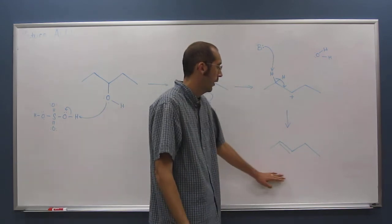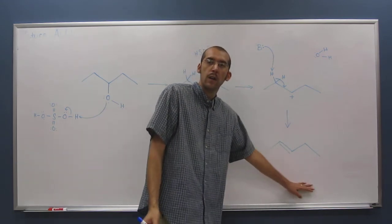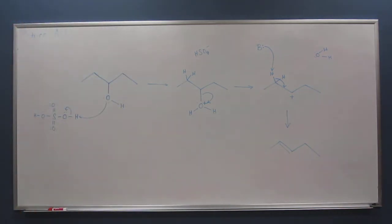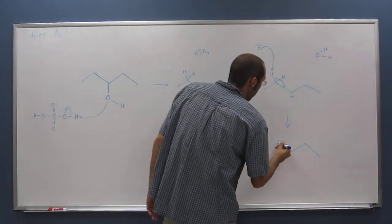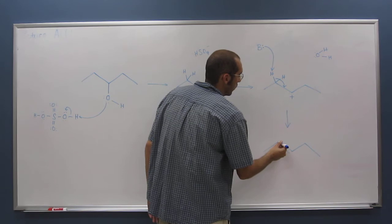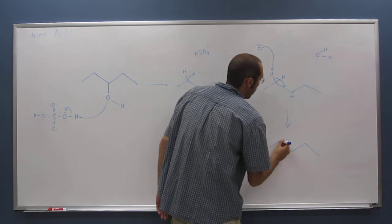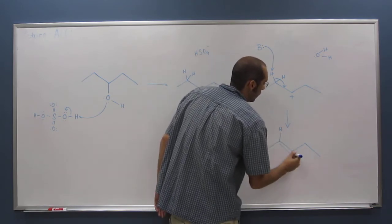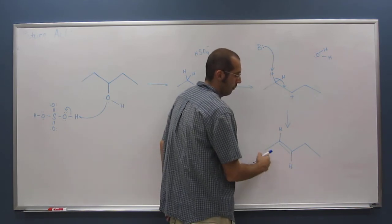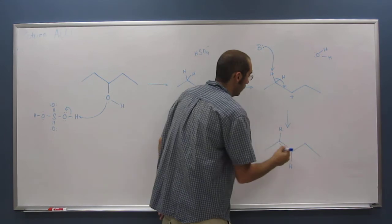And again, we're making the trans isomer over the cis isomer because it's more energetically stable. We don't have the steric interaction between the two groups. On this side we have the hydrogen, so it's a small group, big group, small group, big group.